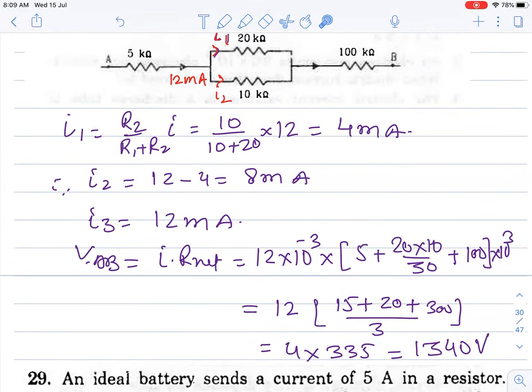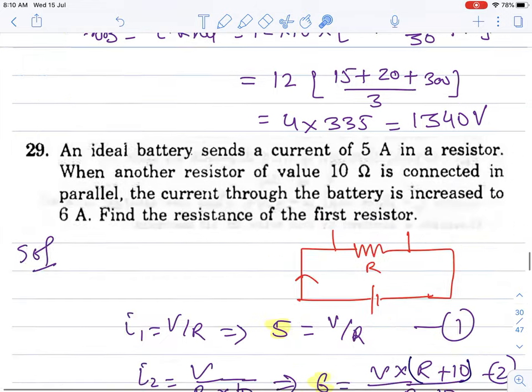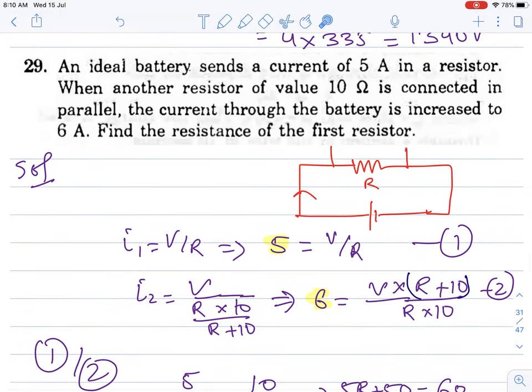Question 29: When ideal battery sends 5 ampere current into the resistor, i₁ = V/R. i₁ is 5, V is potential difference. This is the first equation.